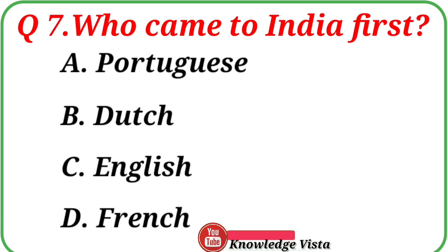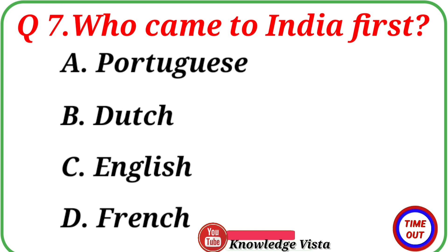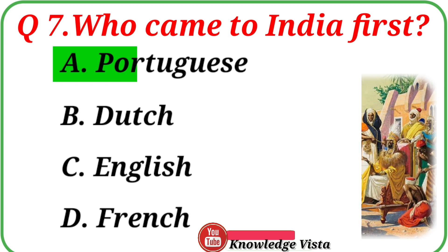Question number seven: Who came to India first? Your options are: A. Portuguese, B. Dutch, C. English, D. French. Correct answer is option A, Portuguese.